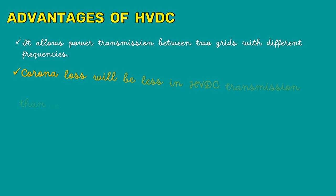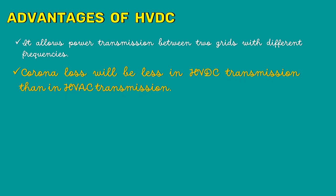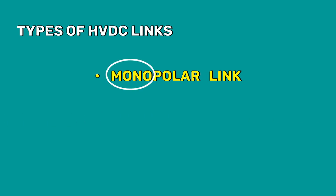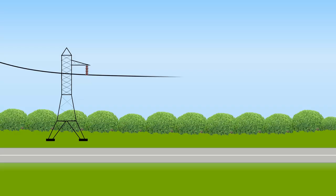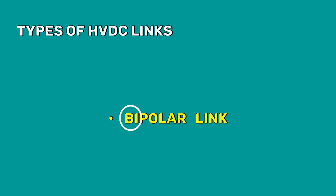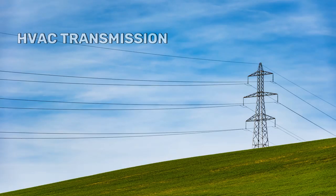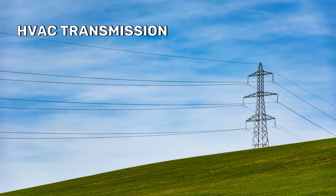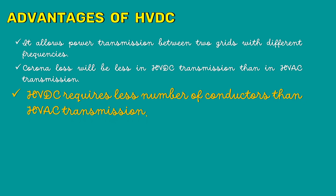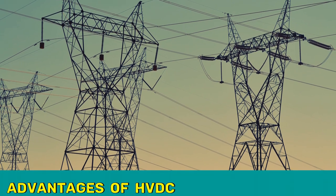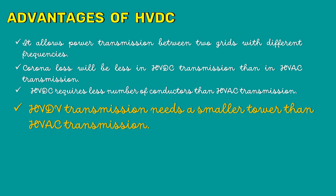Corona loss will be less in HVDC transmission than in HVAC transmission. The HVDC system has mainly two types of links: monopolar link and bipolar link. The monopolar link has only one conductor, while the bipolar link has two conductors. HVAC transmission requires a minimum of three conductors. Since HVDC requires fewer conductors, this obviously decreases the cost of HVDC transmission, and smaller towers are needed compared to HVAC.